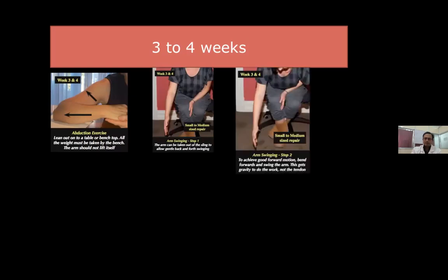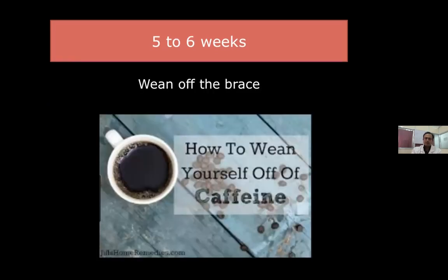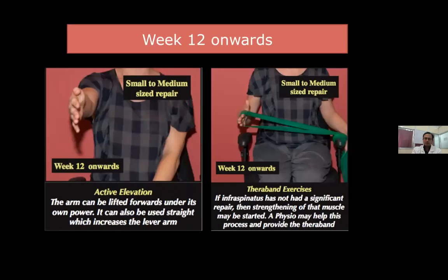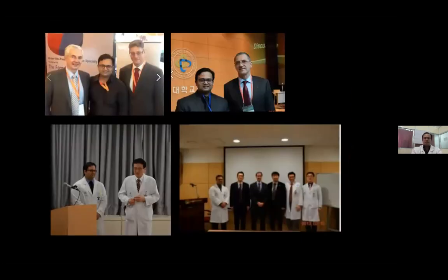In weeks three to four, pendulum exercises, forward bending, and arm slinging begin. At five to six weeks, patients begin coming out of the brace. At three months, they can start sending exercises and return to driving. At 12 weeks onwards, strengthening exercises commence — theraband and active elevation, with the arm lifting under its own power. I have had the pleasure of working with some eminent figures in shoulder and elbow surgery, including my mentor Professor Inho John from South Korea. Thank you for your attention.